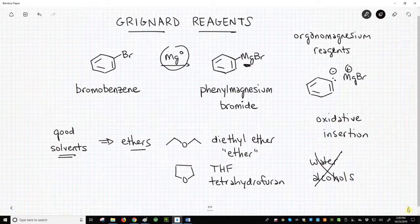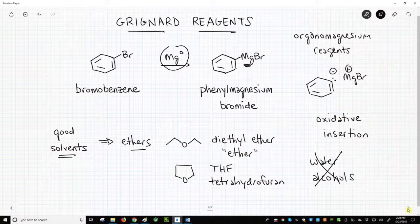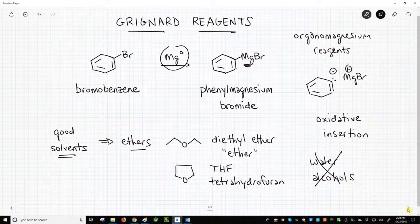Avoid water and alcohols when using Grignard reagents and most other organometallics. So that is the Grignard reagent. We make them by reacting an organic halide with magnesium metal. This forms an organomagnesium reagent, which is both a strong nucleophile and a strong base.